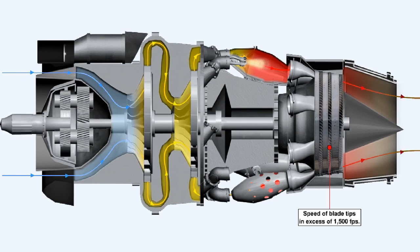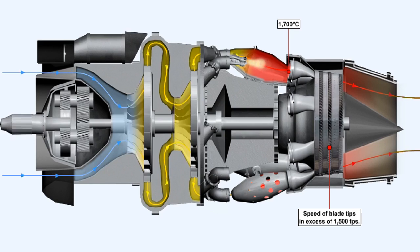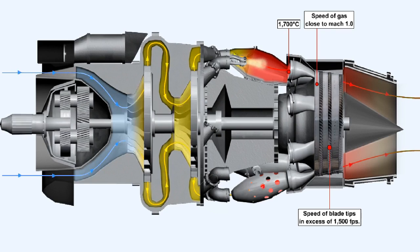During normal operation of the engine, the rotational speed of the turbine may be such that the blade tips travel at a rate in excess of 1,500 feet per second. At the same time, the temperature of the gases driving the turbine can, in a modern engine, reach as high as 1,700 degrees Celsius. The speed of these gases is as high as 2,500 feet per second, which is close to the speed of sound at these temperatures.